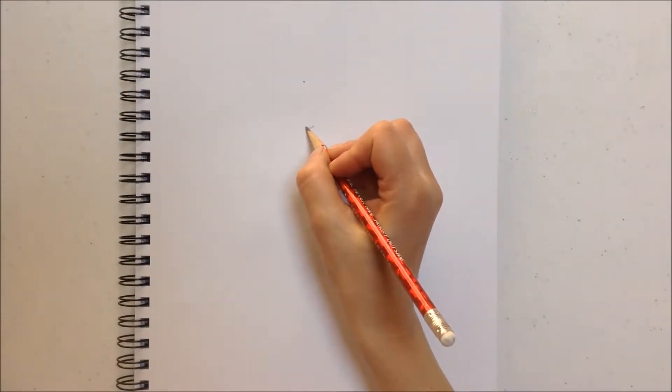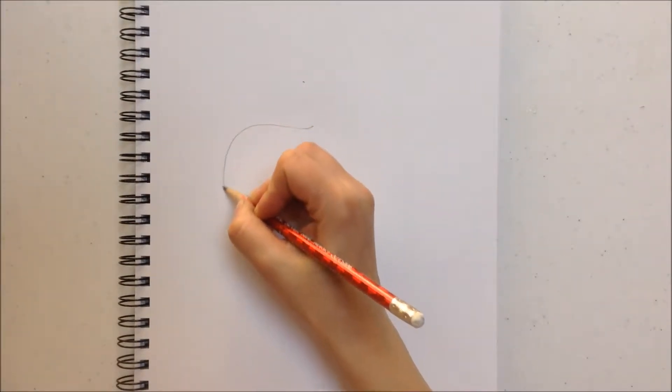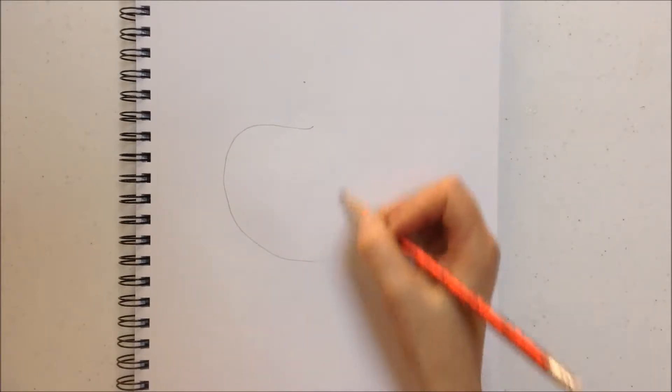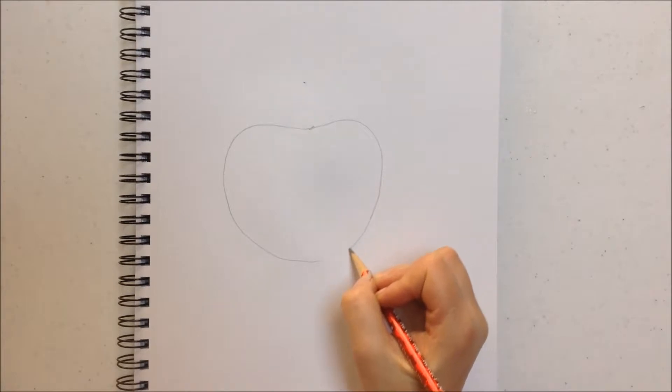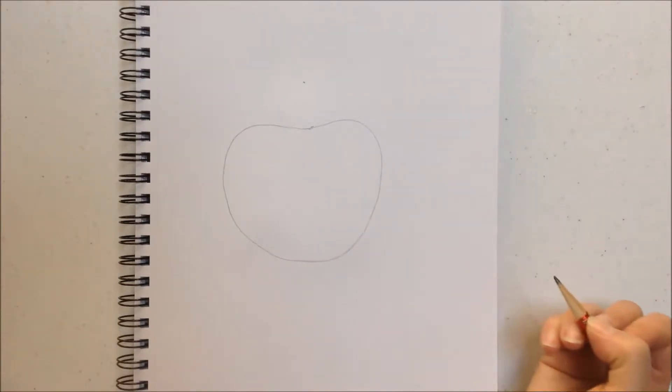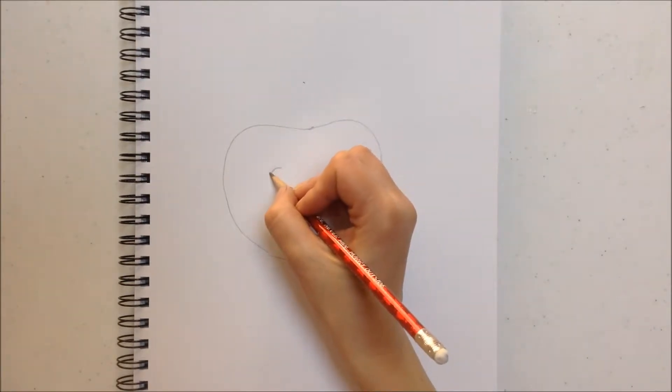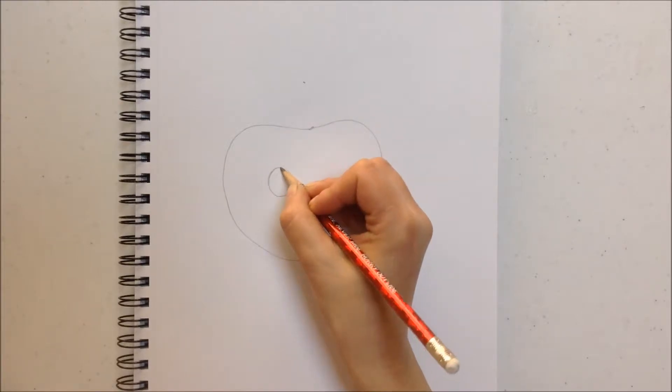First we're going to start by drawing the apple shape. Let's put on two big eyes.